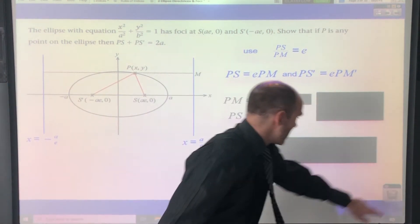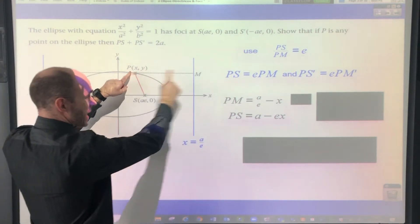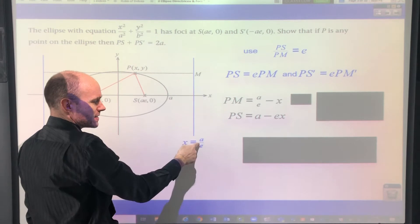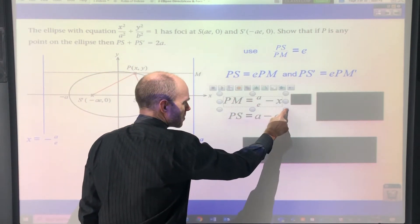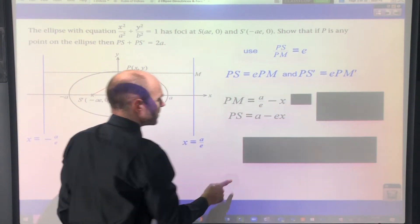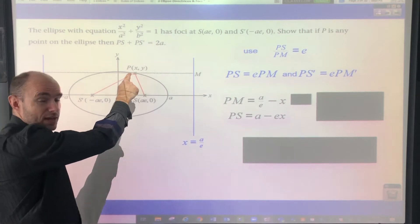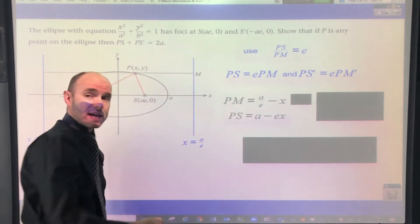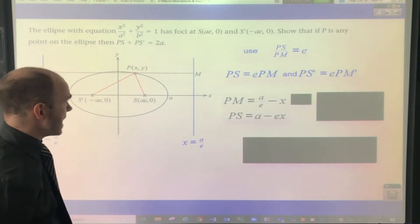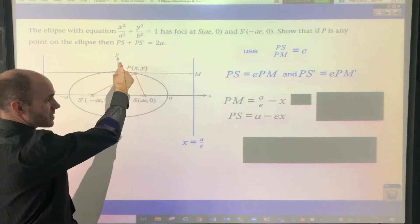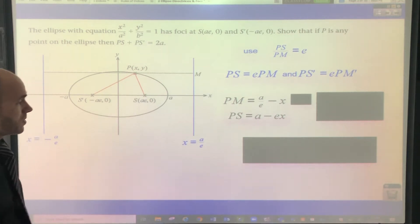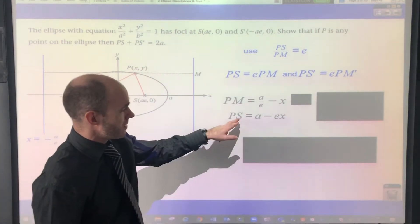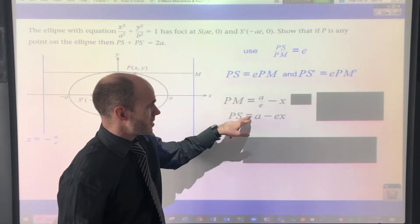In terms of PM, that's quite straightforward. That's this bit here, of course. So you've got the x-coordinate of M is a over e. Let's make that fraction a little bit bigger so you can see it. There we go. And you've got that x-coordinate there, so that bit there is the difference between this and this. So a over e minus x. In terms of PS, so that's from here to here, that's going to be e multiplied by PM. So PS is equal to e times that, so a minus ex.